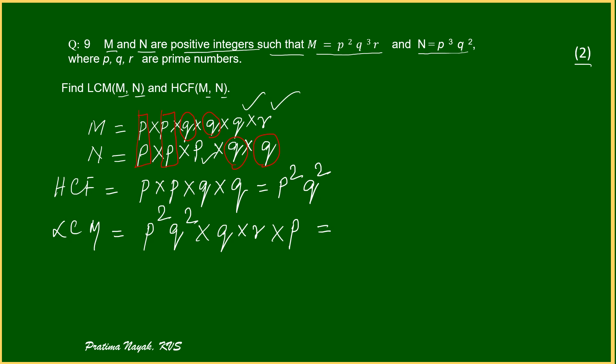Now p square multiplies p. It will give me p cube. And q square and q, it will give me q cube. And of course, this r is there. It will be written. So, p cube, q cube, r is the LCM.